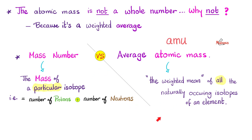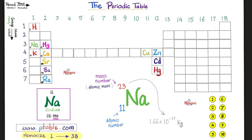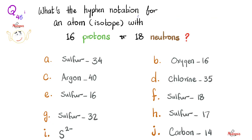Chemistry makes so much sense once you understand what you're talking about. Please download the periodic table from ptable.com and memorize the elements from number 1 through number 38. Here's a question for you: what's the hyphen notation for an atom or isotope with 16 protons and 18 neutrons?